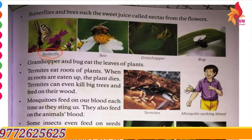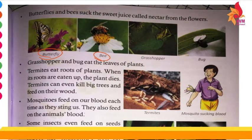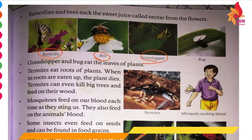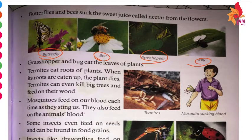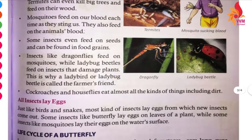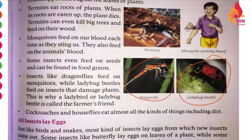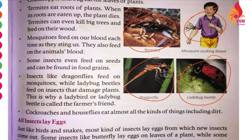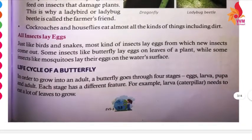Food for insects — what do they consume? Butterflies consume nectar. Birds eat plants, grass, leaves, and vegetables. Ladybugs consume plant leaves. Termites consume the roots. Mosquitoes feed on the blood of human beings. So these are the different types of animals and how they are feeding.